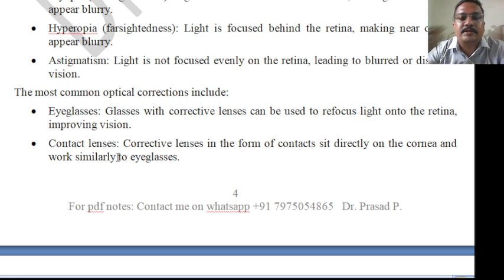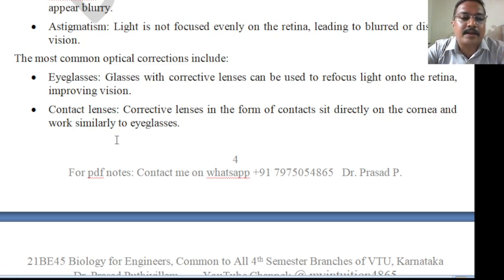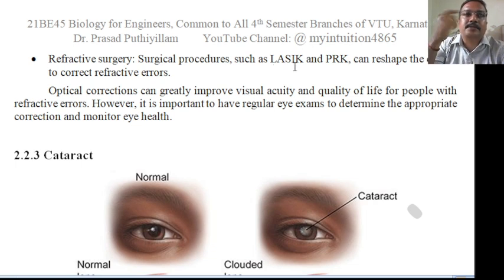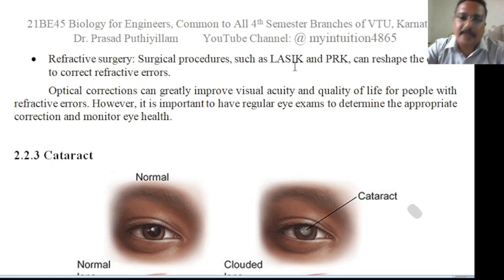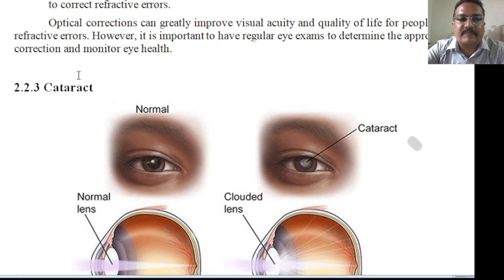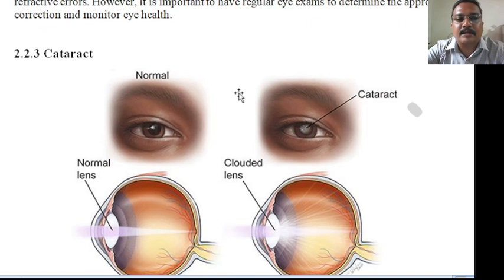Corrective lenses can also be used as contact lenses, which sit directly on the cornea and work similarly to eyeglasses. Surgery is another option, such as LASIK surgery — where cuts are made and the lens is reshaped — or PRK surgery, which drills and makes the required corrections. These are surgical procedures used to correct refractive errors, which are related to the behavior of light in the eye.